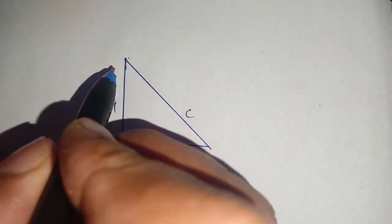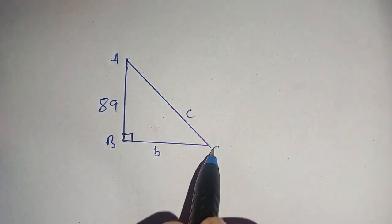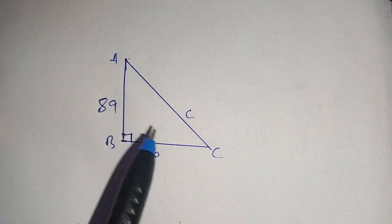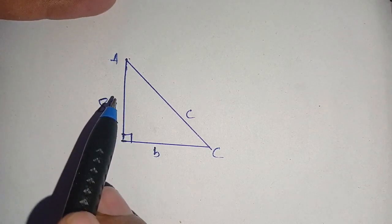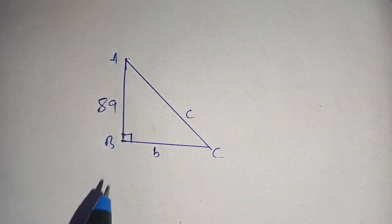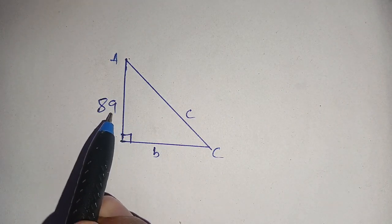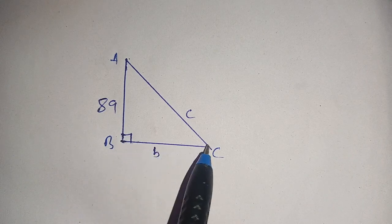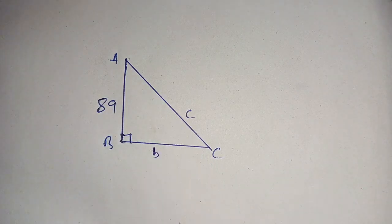In today's video, we are given a triangle A, B, and C. This is a right triangle and we have to find its perimeter, meaning we have to find the total length of this triangle. It is given that the height value is 89 units. We suppose that this length is b units and this length is c units.